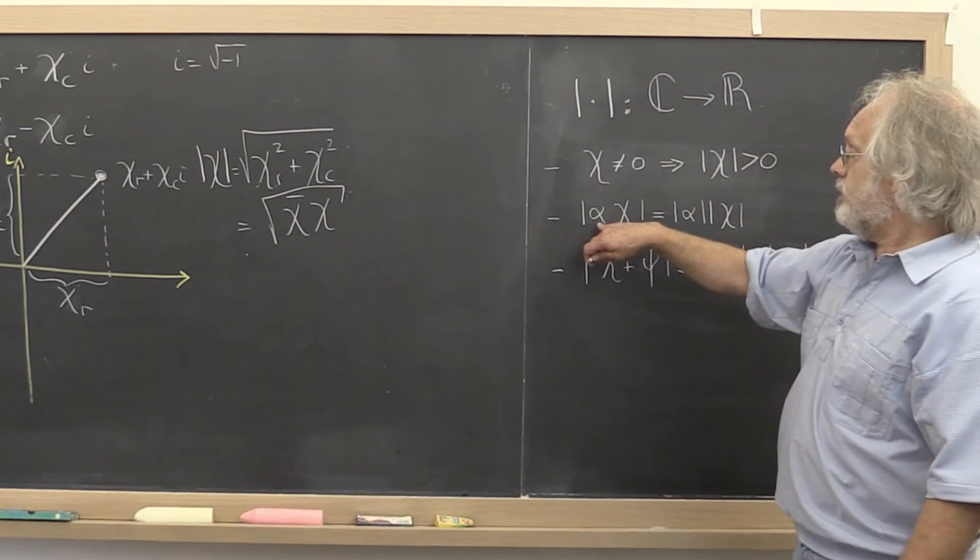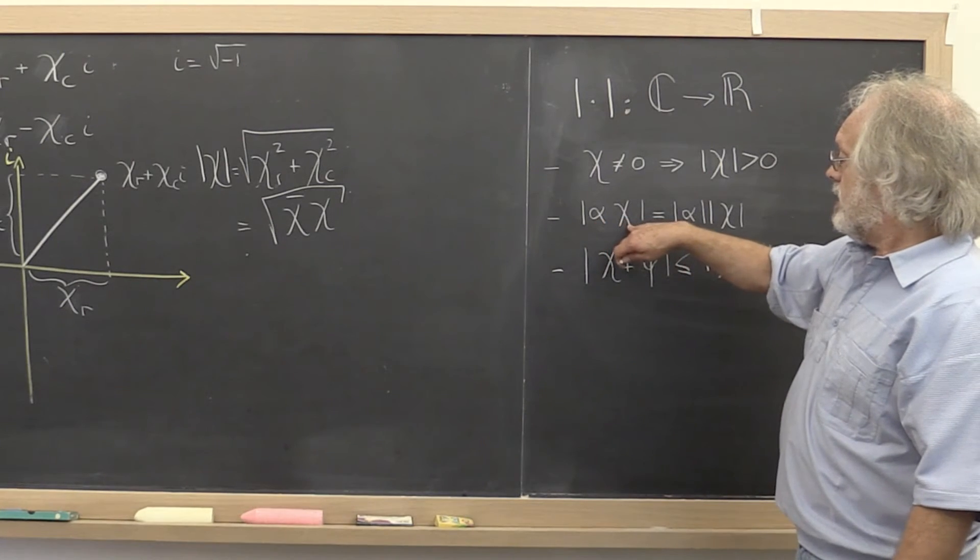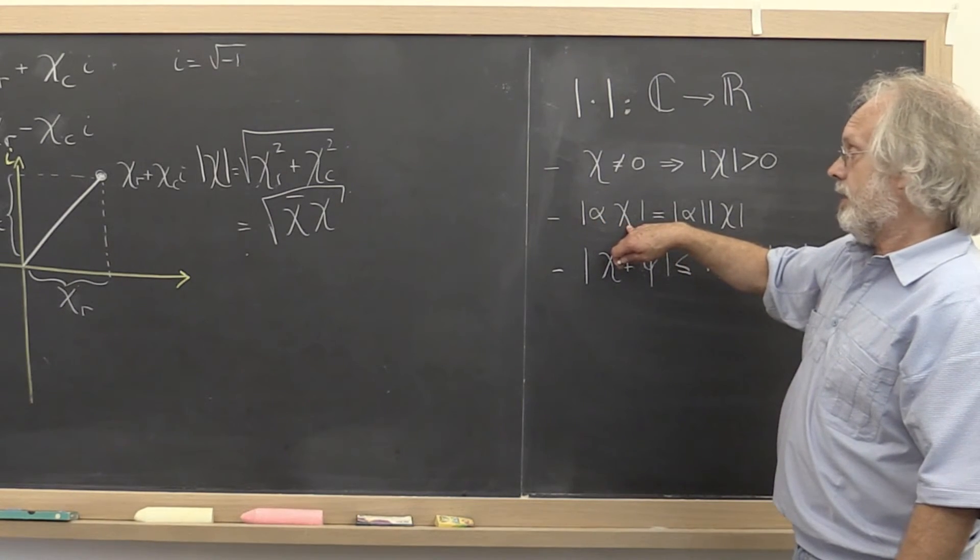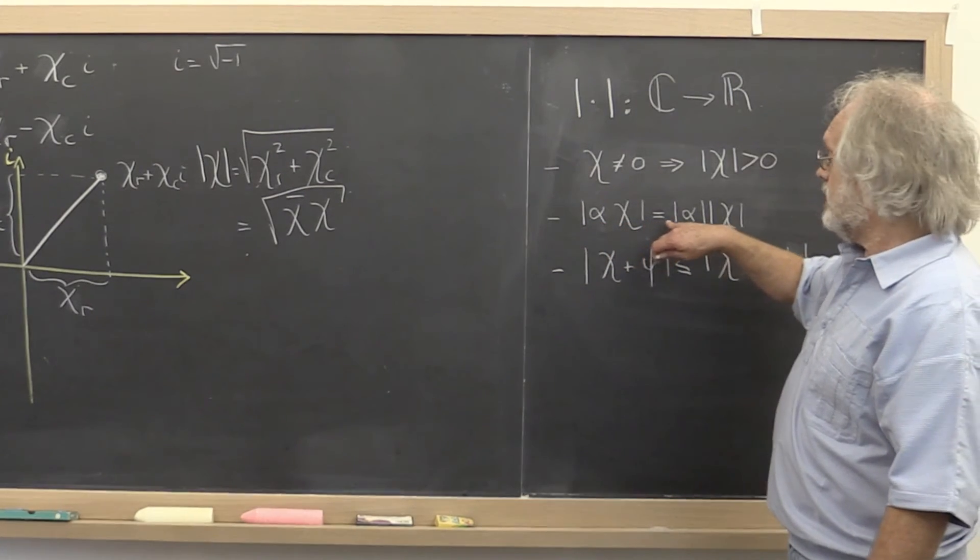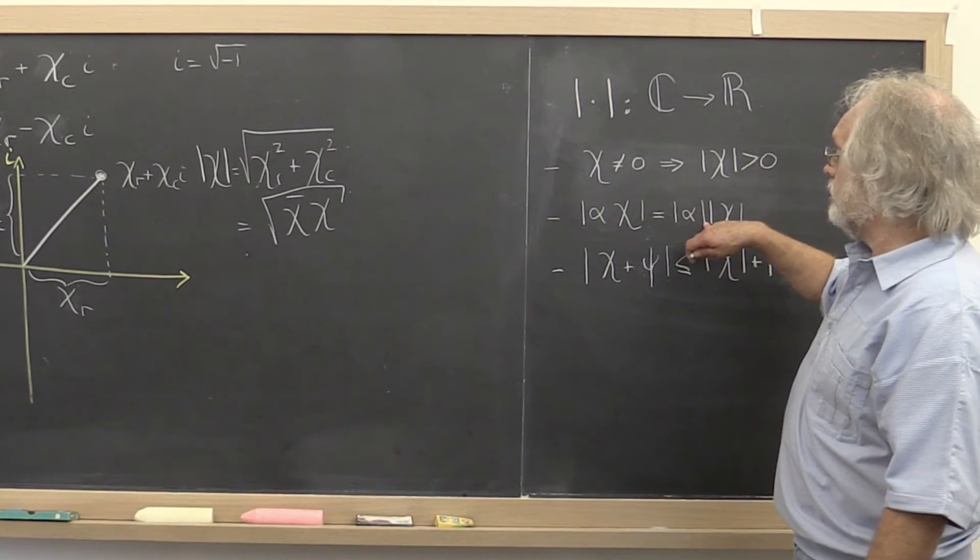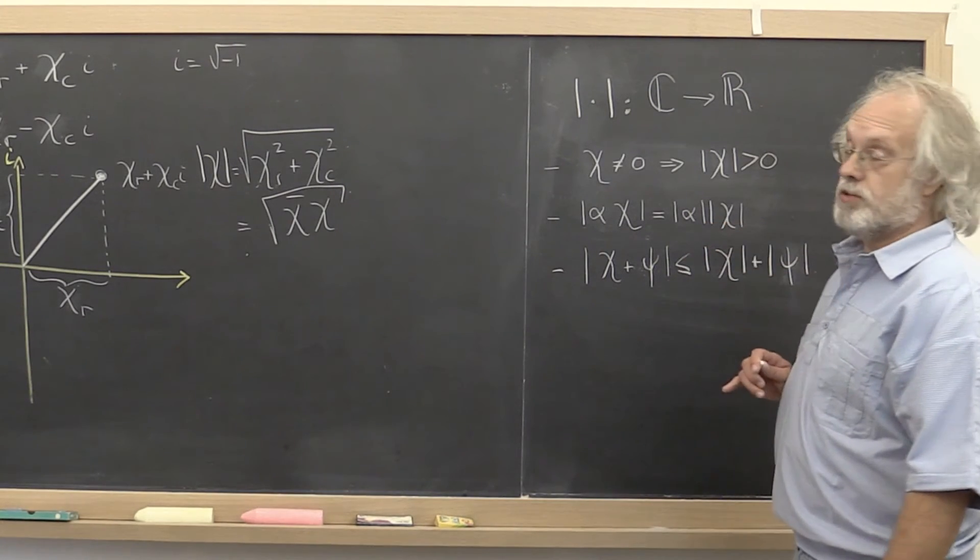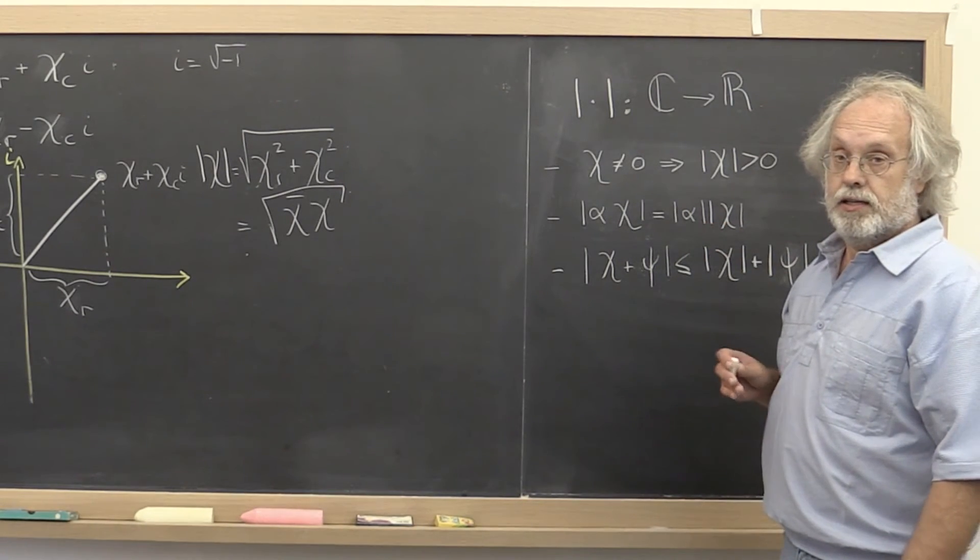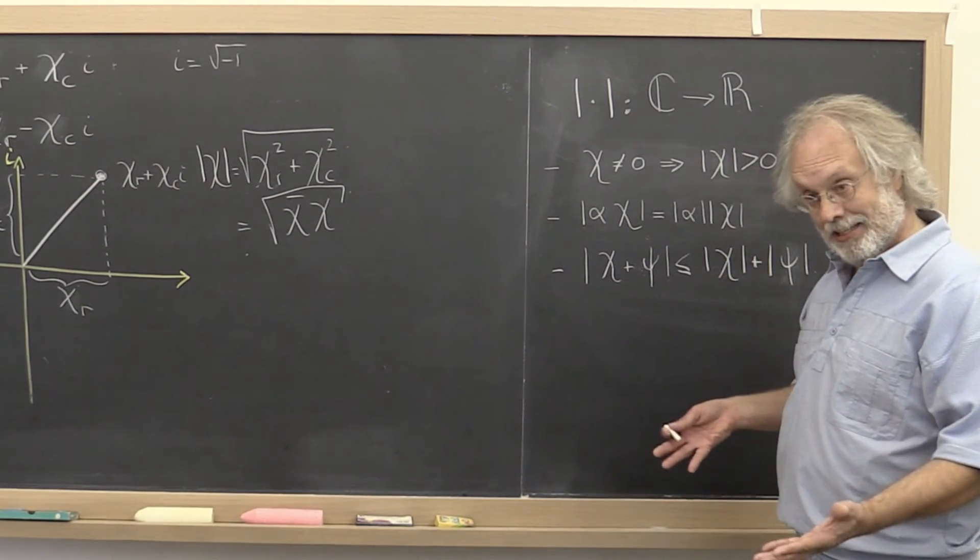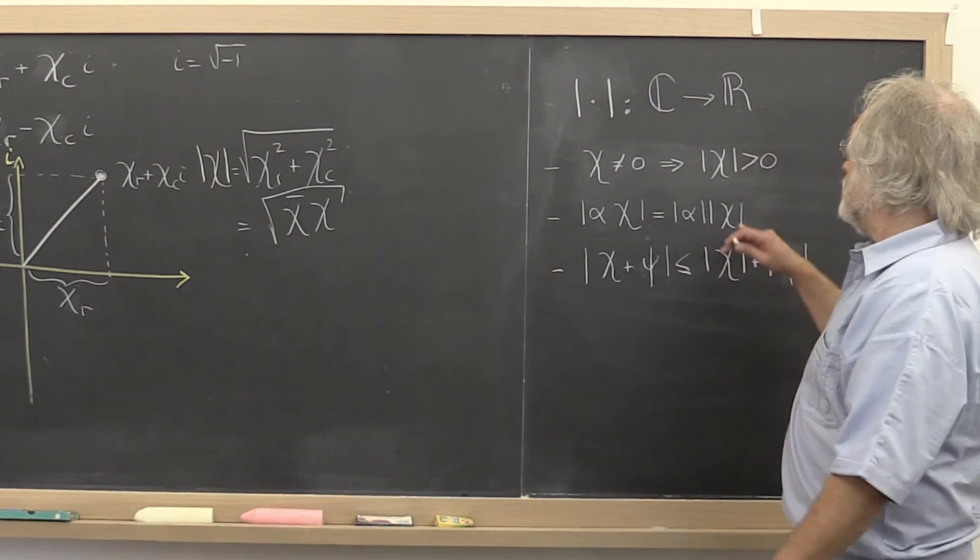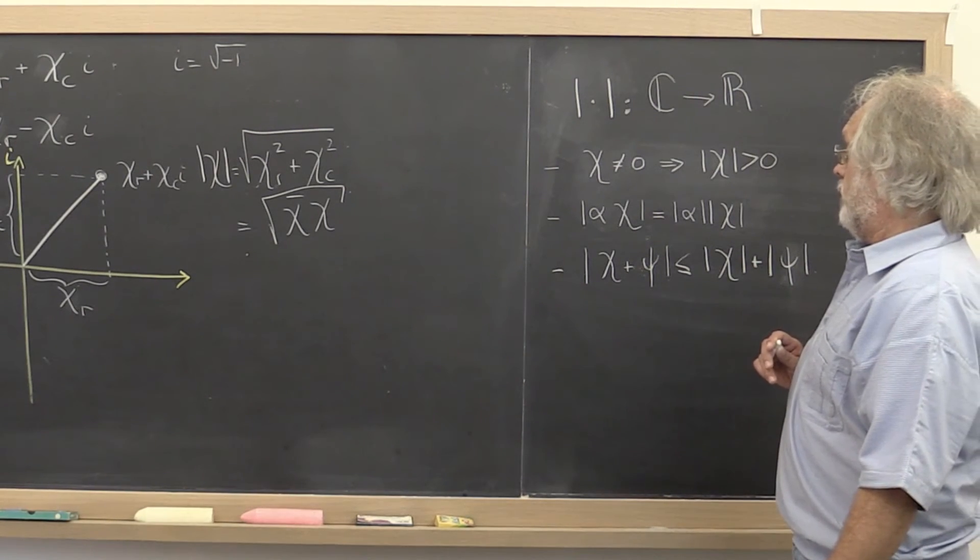Also, notice that if you take a complex number and scale chi with that, and then you take its absolute value, you get the same number as if you do the absolute value of alpha times the absolute value of chi. That's known as the homogeneity property of the absolute value.